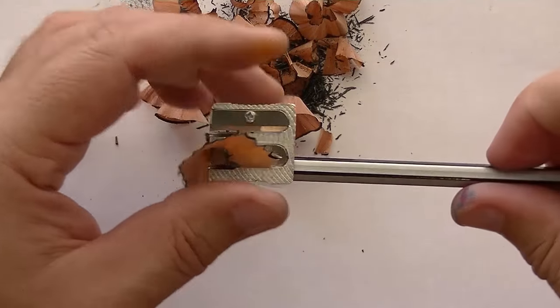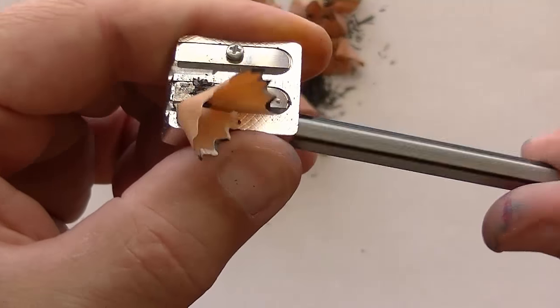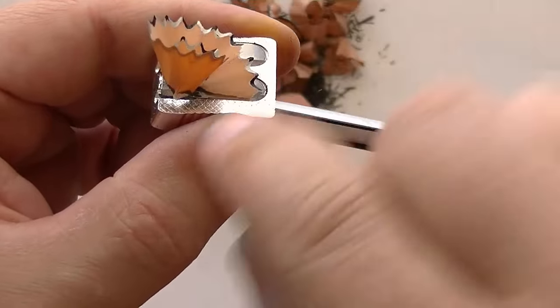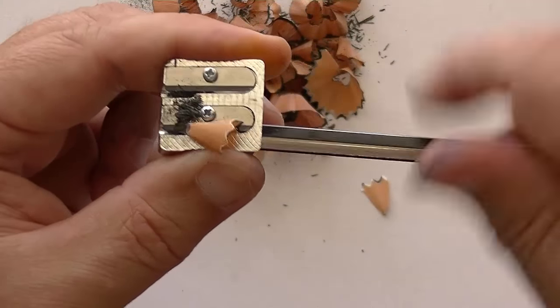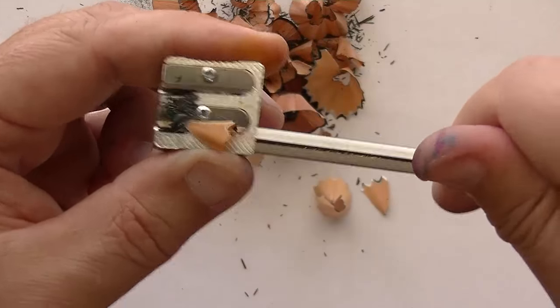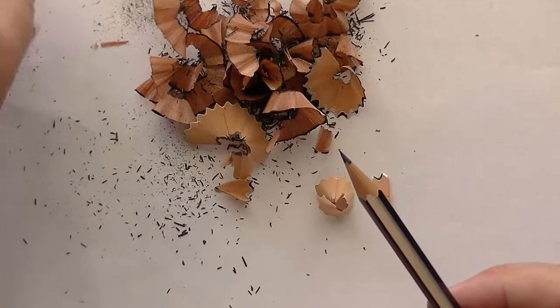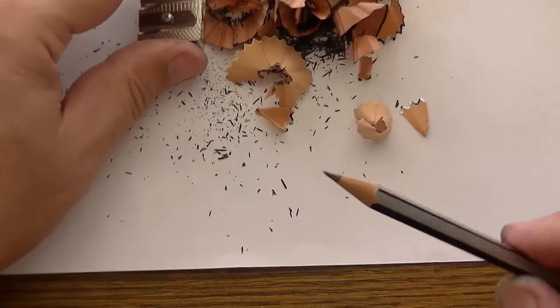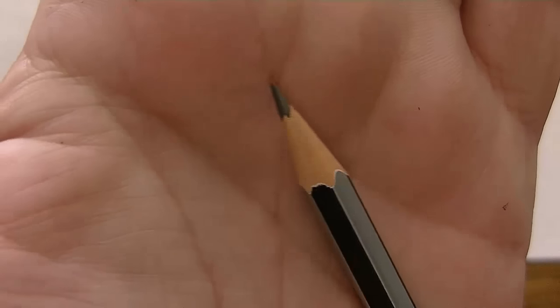And remember, once you start seeing the graphite being shaven off here you need to stop. So I'm going to stop here and check, and it's finished. Take a look at the point. So now you can see that it is just a regular old point.